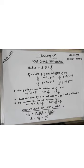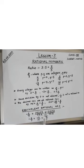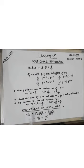Now some important terms related to rational numbers: equivalent rational numbers. Two or more rational numbers are called equivalent rational numbers if they have the same value. For example, take minus 2 upon 7 and convert it into equivalent rational numbers. To obtain equivalent rational numbers, you multiply both the numerator and denominator by the same number.